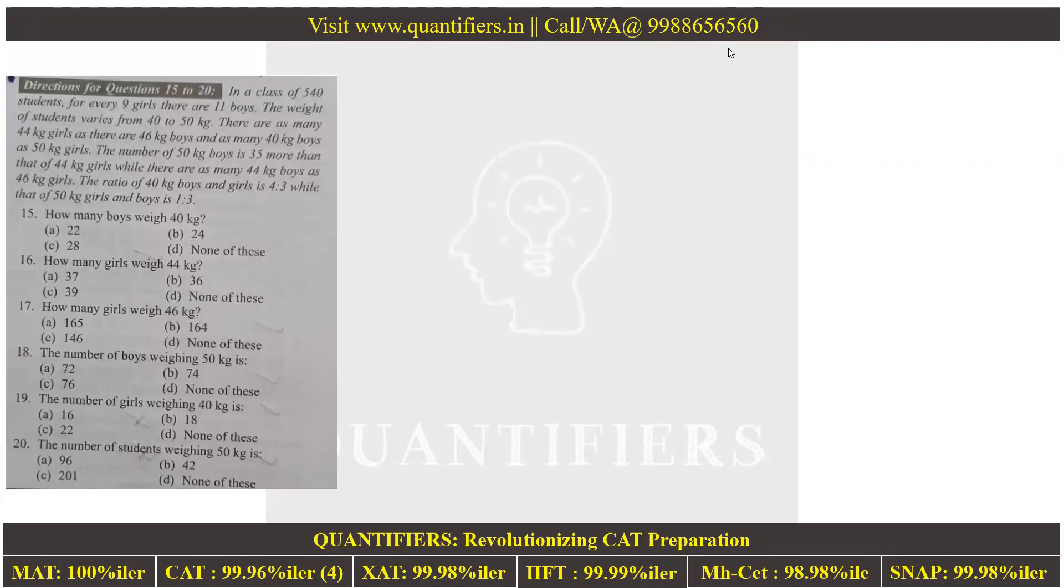This set was just received on WhatsApp. I'm trying to solve it in real time. I haven't read it before, just to see how to approach any DI set from the grassroots. In a class of 540 students, for every 9 girls there are 11 boys. So the ratio of girls to boys is 9:11.